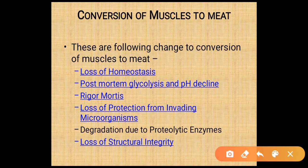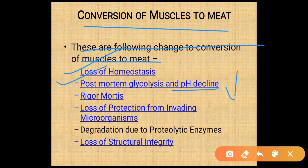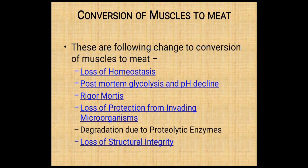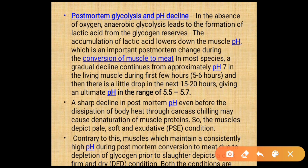Conversion of muscle to meat involves: loss of homeostasis, post-mortem glycolysis and pH decline, rigor mortis, loss of protection from invading microorganisms, and degradation by proteolytic enzymes with loss of structural integrity. In the absence of oxygen, anaerobic glycolysis leads to the formation of lactic acid from glycogen reserves. Accumulation of lactic acid lowers the muscle pH.